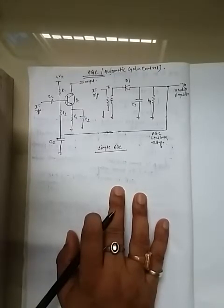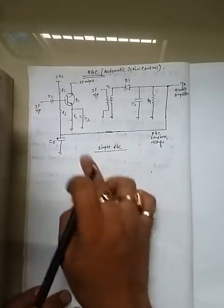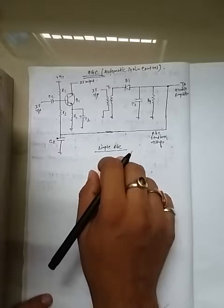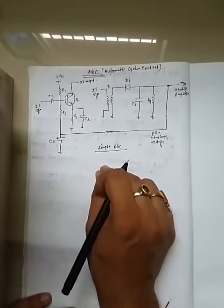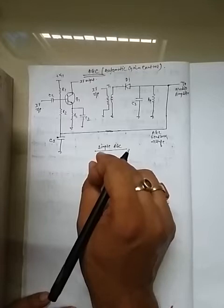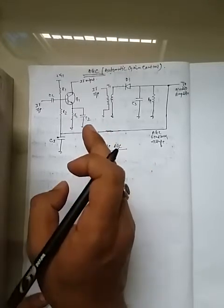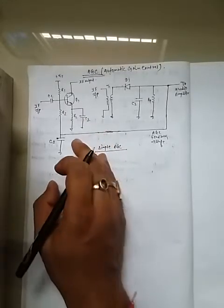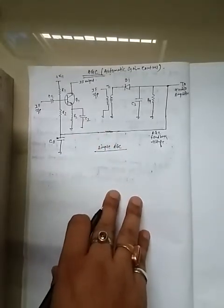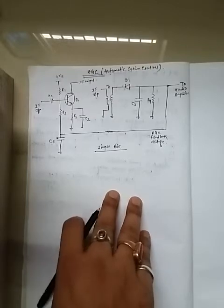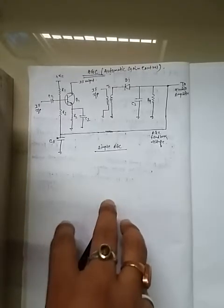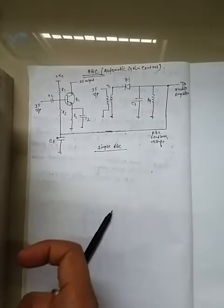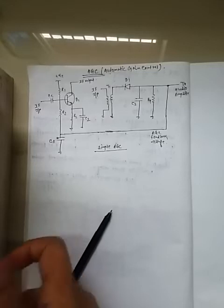To maintain the constant output, the AGC circuit is used. Where is the AGC circuit applied in the receiver? It is applied in the RF section, the IF section, and the mixing stage. The AGC circuit is used to maintain the constant gain or constant output.